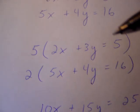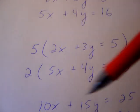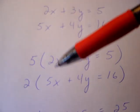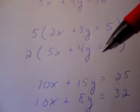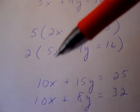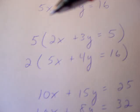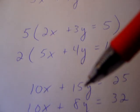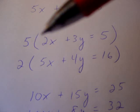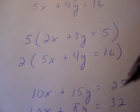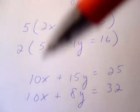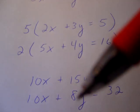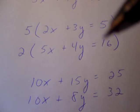And again, you must multiply these factors to everything, not just the first term, to all the terms. Here we go. 5 times 2x gives us 10x. 5 times 3y gives us 15y. And 5 times 5 is 25. Here we have 2 times 5x is 10x. 2 times 4y is 8y. And 2 times 16 is 32.